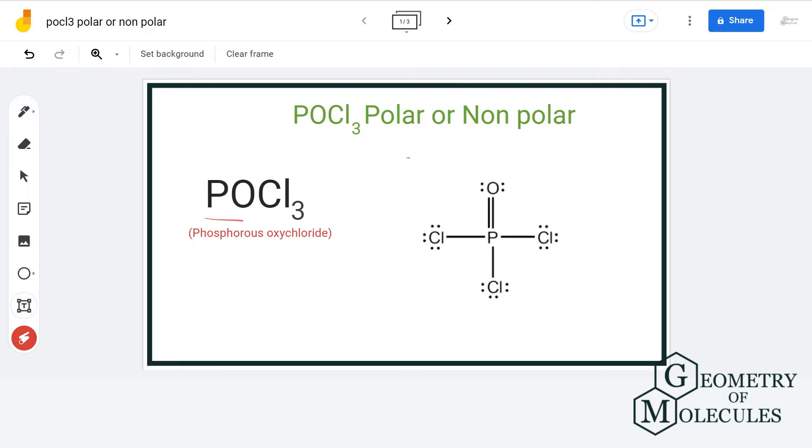It's a chemical formula of phosphorous oxychloride. To understand its polarity, we will first look at its Lewis structure followed by its molecular structure.